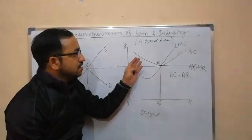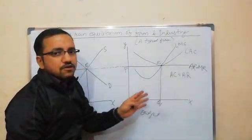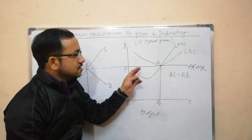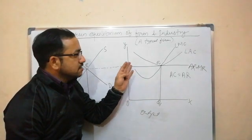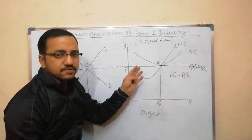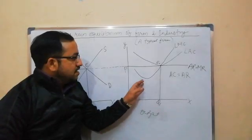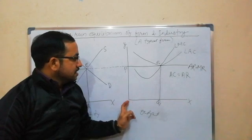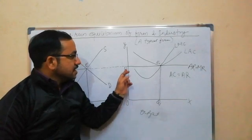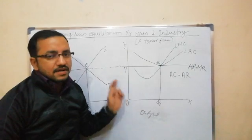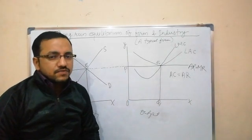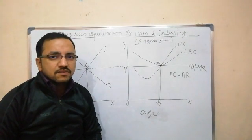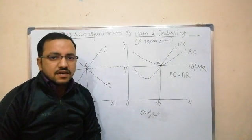All firms in the market will earn only normal profit in the long run, and will be able to adjust their plant size to produce at the minimum point of their LAC. This typical firm achieves equilibrium at point e1, with equilibrium quantity OQ1 and equilibrium price OP, which is determined by the industry. This diagrammatically describes the long run equilibrium of firm and industry under perfect competition.